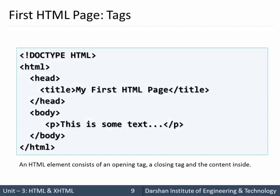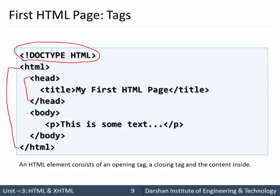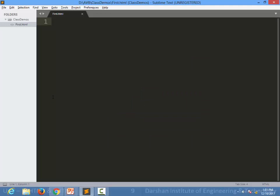Now let's look at our first HTML page. There is a doctype declaration which we are going to ignore in this session — we will cover that after we learn XHTML. So we have our HTML tag, head tag, and body tag. Let's see an example of how we can write our first HTML page using Sublime editor. We have to save it as .htm or .html.